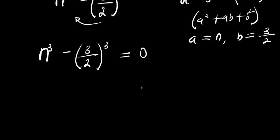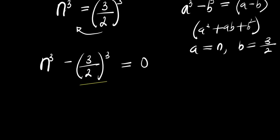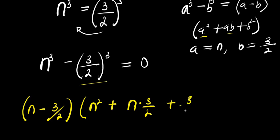Applying that identity, we have (n minus 3/2) times (n squared plus n times 3/2 plus (3/2) squared) equals 0.